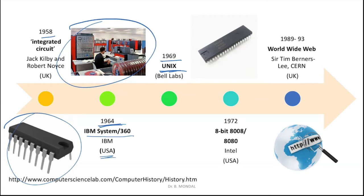In 1969, UNIX was developed by Bell Labs — the first operating system developed for a specific device, later extended as a general operating system. We still use UNIX-based operating systems today — even Android on your phone is based on it. In 1972, the first 8-bit microprocessor was developed by Intel, and the size of computers started becoming smaller and smaller. Between 1989 and 1993, the World Wide Web concept came for the public.